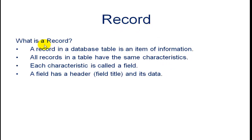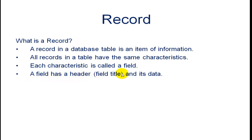What is a record? A record in a database table is an item of information. All records in the table have the same characteristics. Each characteristic is called a field. A field has a header, a field title, and its data.